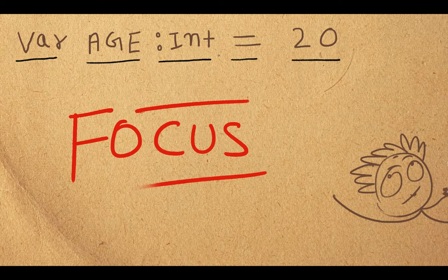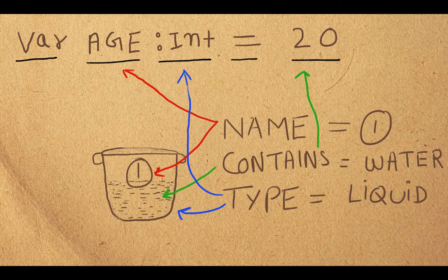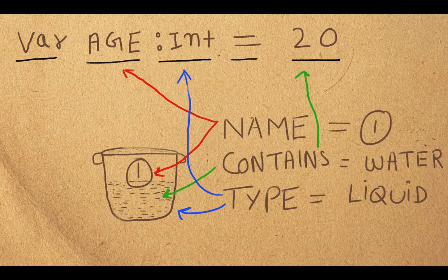The type is a big topic and I am dedicating a whole video for it so things become crystal clear. Now look at this: the bucket and the variable are the same thing. The code line is from Kotlin and below we have a real-life bucket. Both have a name — the variable has the name 'age' and the bucket has the name 'one.' The bucket has water; the age variable has 20. The type of the bucket content is liquid; the type of age is Int.